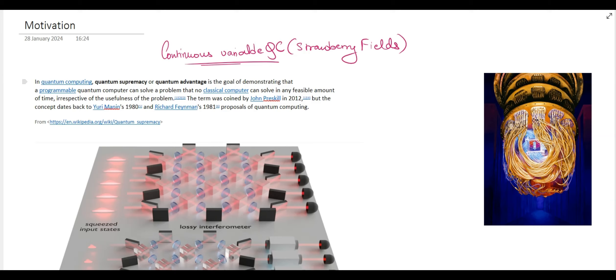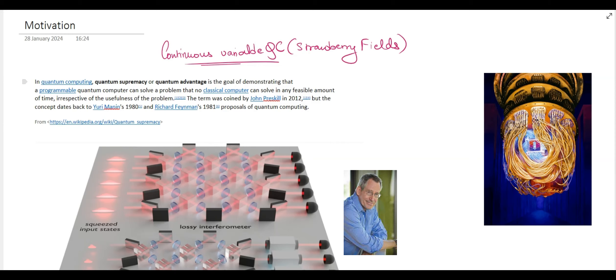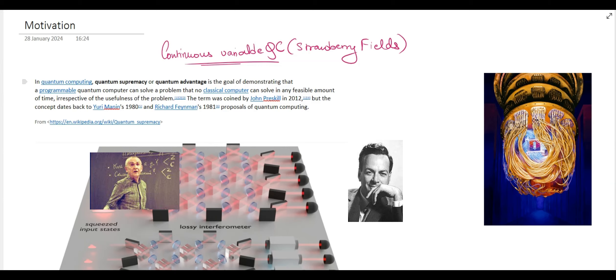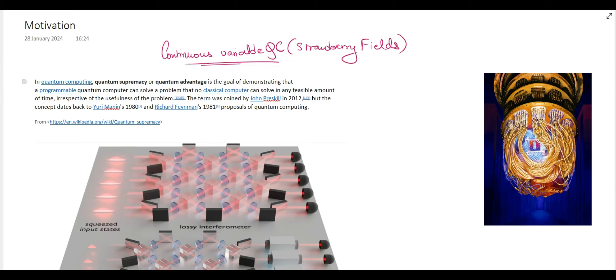This term was coined by John Preskill in 2012, but the concept that quantum computers should have some advantage compared to classical computers was already proposed by Uri Mannin and Richard Feynman, where they were discussing that quantum computers should be used for simulations of quantum systems rather than classical computers.